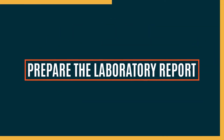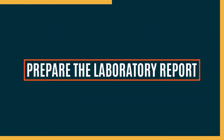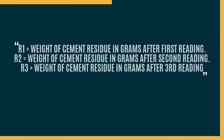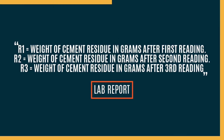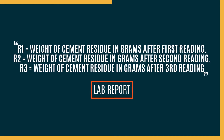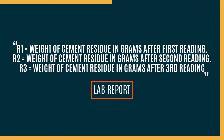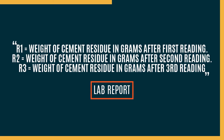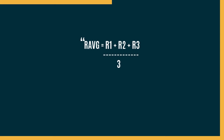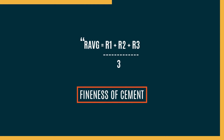Here's how we can prepare the laboratory report. We take R1 equals the weight of cement residue in grams left after sieving. For the second test, R2 equals the weight of the second cement residue in grams left after sieving. For the third, R3 equals the weight of the third cement residue in grams left after sieving. R average equals R1 plus R2 plus R3 divided by three, and this R average as a percentage gives you the fineness of the cement sample.